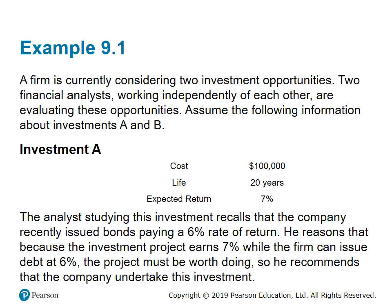Let's start with an example to understand the concept. A firm is considering two investment opportunities, and two financial analysts working independently are evaluating these. Investment A has a cost of one hundred thousand dollars, a lifetime of 20 years, and an expected return of 7%. The first analyst recalls that the company recently issued bonds paying 6%, and reasons that because the investment earns 7% while the firm can issue debt at 6%, the project is worth doing. He compared the cost of the bonds financing the project to the return of the investment.